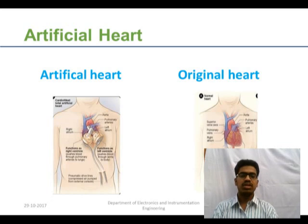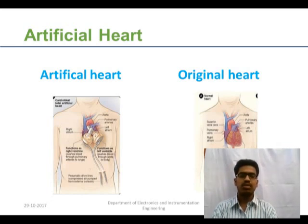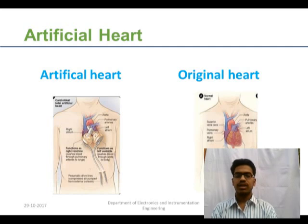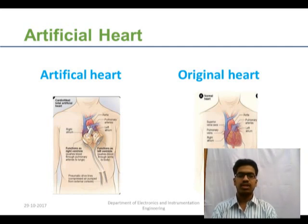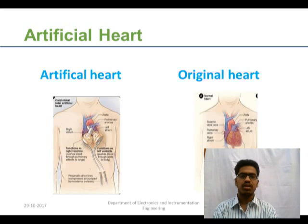From the diagram you can see the difference between the artificial heart and the original heart. When the original heart fails to perform its function, the artificial heart will be placed in the cavity of the original heart, and the pumping action will be supplied by an external motor through a backpack supported by the patient.